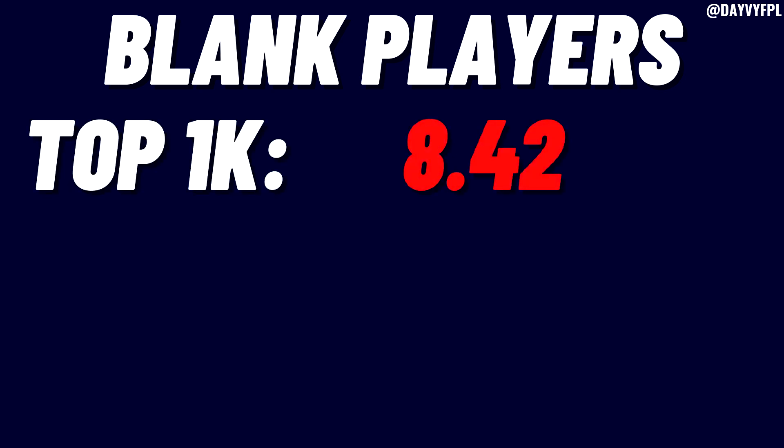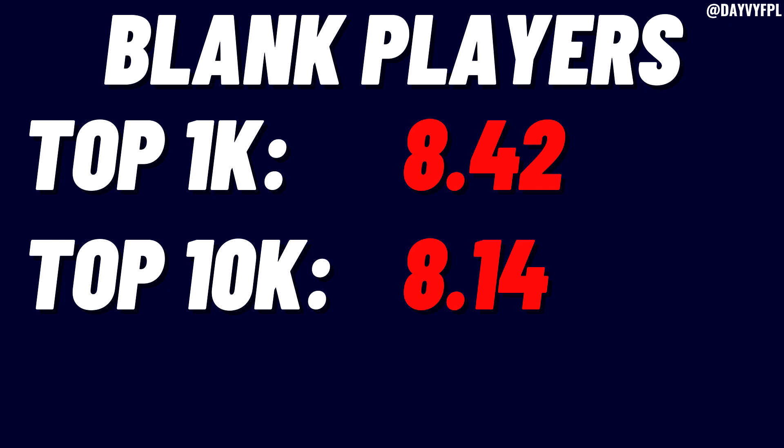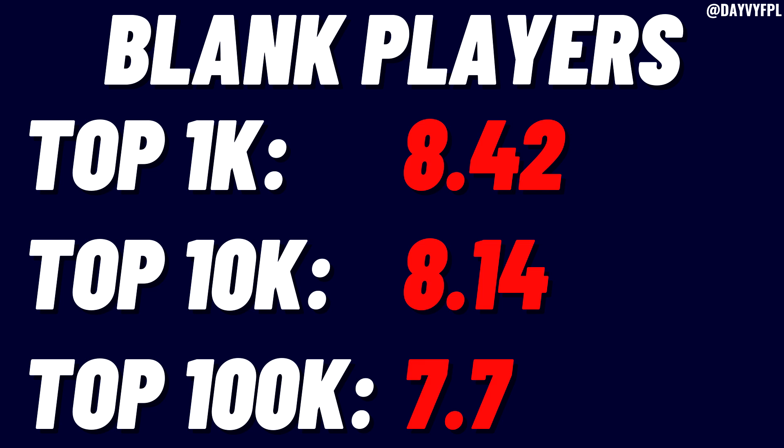I then adjusted those numbers to account for injuries, mainly Luka Dinja and Jared Bowen. In the top 1k the average drops to 8.42 — still roughly eight to nine players. The top 10k drops to 8.14 and the top 100k drops below eight to 7.7, which still rounds up to about eight options, so the mean of eight players is maintained.